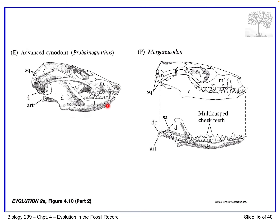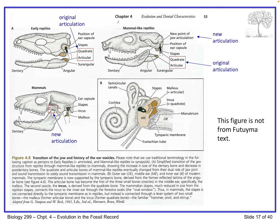Moving forward in time, we see an advanced cynodont - what you could consider to be basically a modern mammal - with the exception that you still have the quadrate and the articular, but you also have a new articulation between the dentary and the squamosal. This individual actually had two articulations. Now over here on the right, we have the lower jaw being one bone only, the dentary - 100% dentary. The other bones have been lost. The articular and the quadrate are still articulating with one another, but we also have a newer jaw joint articulation which becomes the modern mammal jaw joint.